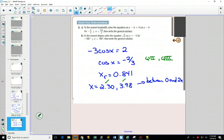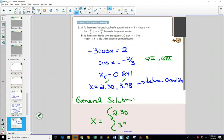In this case it did. Our general solution x equals, we have two answers between 0 and 2π, 2.30, 3.98. This was in radians, so we can go plus 2kπ, plus 2kπ, where k is an integer.